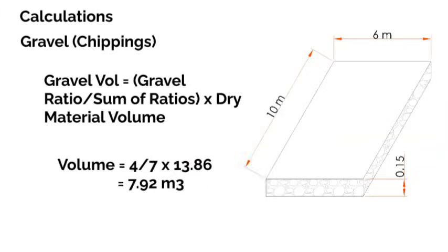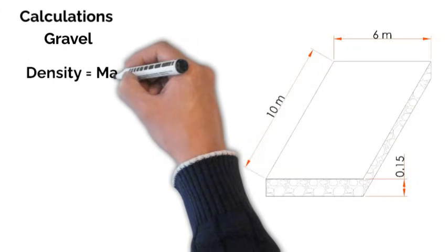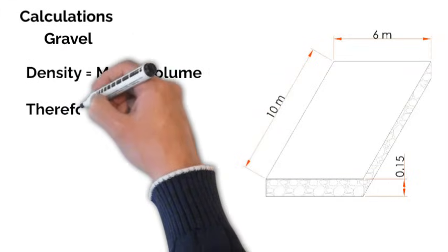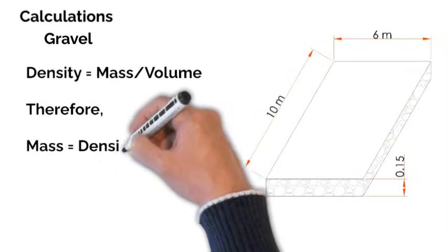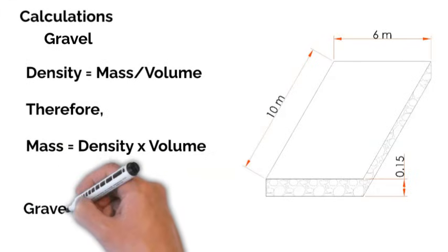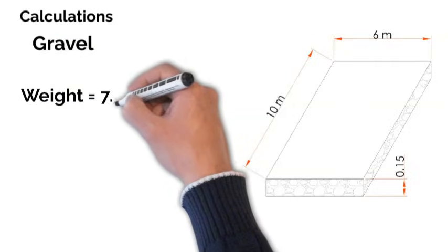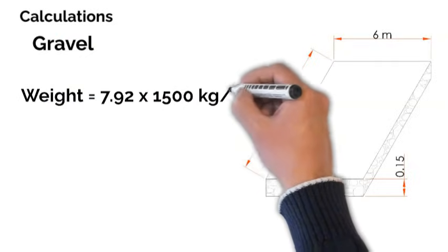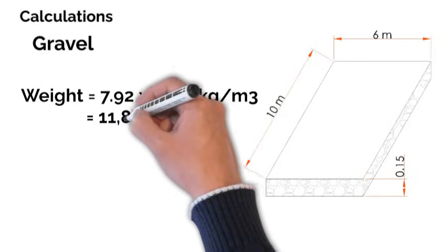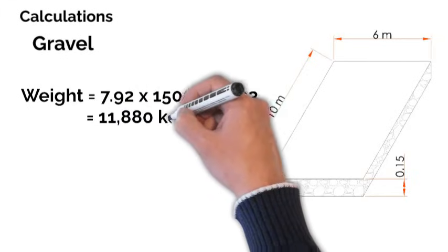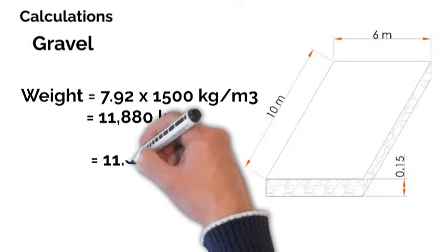As before, the weight equals density by volume, with gravel having a density of 1500 kg per cubic meter. Therefore, the weight is 7.92 multiplied by 1500, which gives us 11,880 kg, or about 11.9 tons.